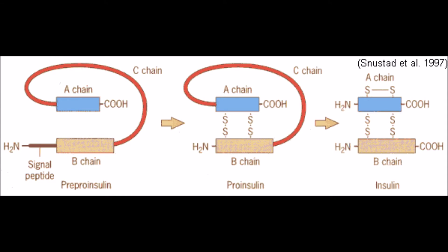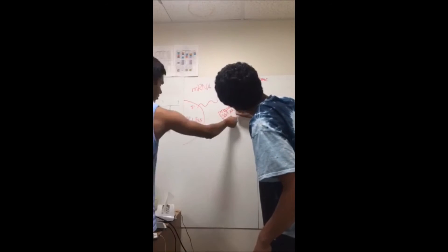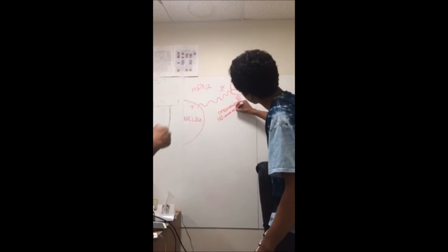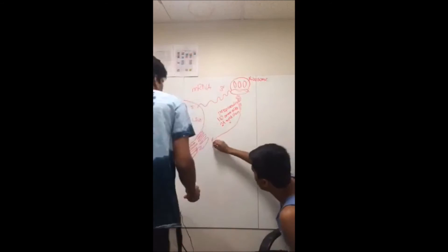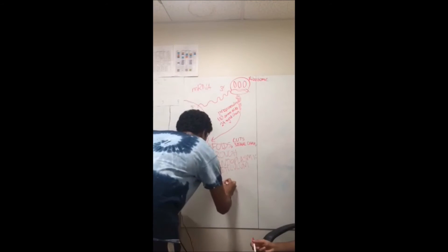This primary translation product is far off from becoming the 51 amino acid protein of insulin. The pre-proinsulin makes its way to the rough endoplasmic reticulum for further processing. Once the pre-proinsulin reaches the ER, a protease cleaves off the signal peptide and folds the remaining chain to create proinsulin.